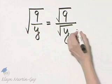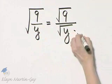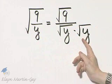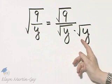So notice, if I multiply the denominator of this expression by the square root of y, I would have the square root of y squared, which simplifies to y, because y represents a positive number here.